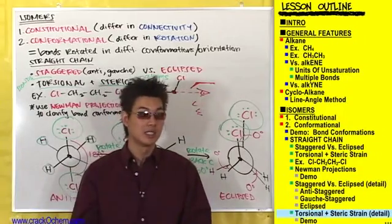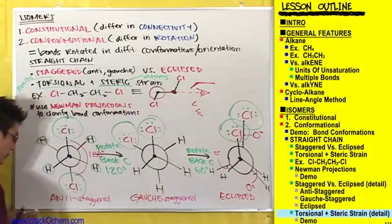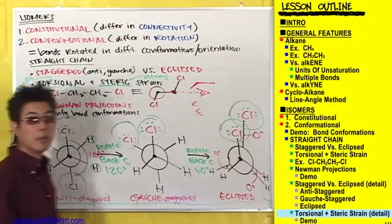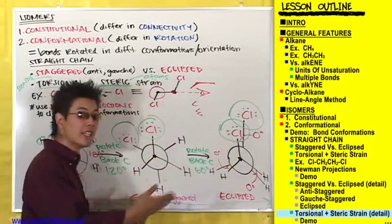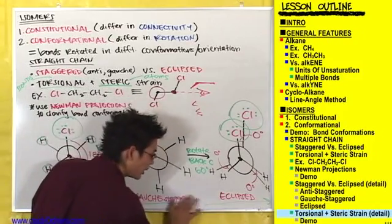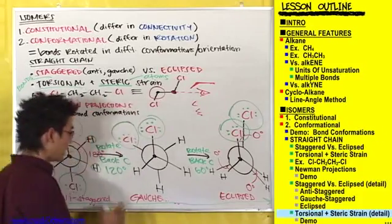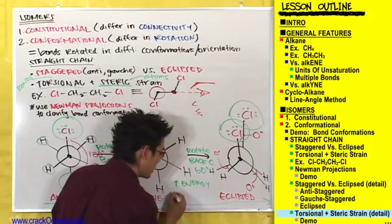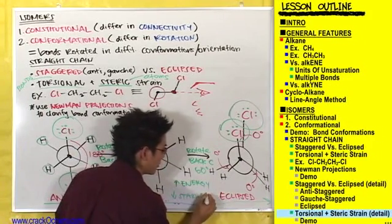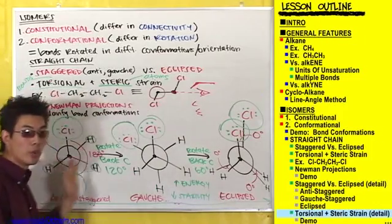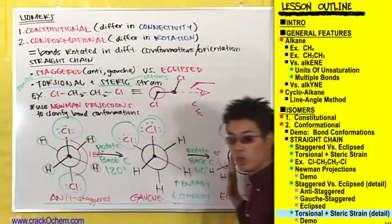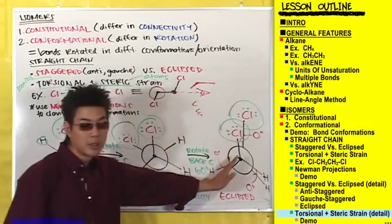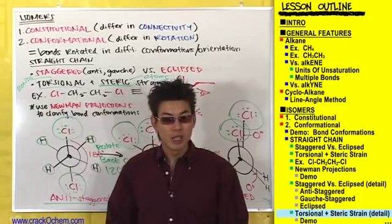Draw an arrow going from anti-staggered to gauche-staggered to eclipsed, because as you go from anti to gauche to eclipsed you are increasing in energy and decreasing stability. As you go in that direction, you are maximizing torsional and steric strain. As you go the opposite way, you are minimizing torsional and steric strain. This is why anti is the most stable and eclipsed is the least stable. If you want to use models to see how this works, let's check it out.